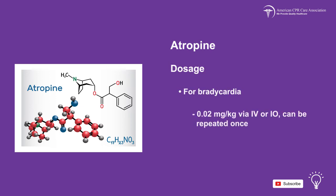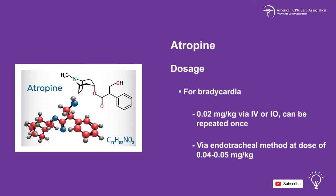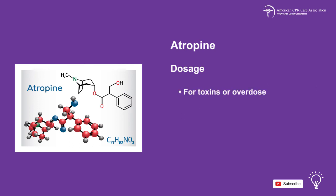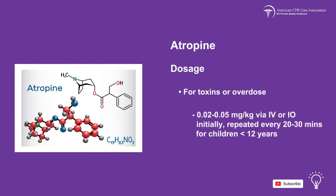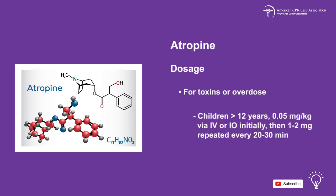The dosage for bradycardia is 0.02 mg per kg via IV or IO route, and this dose can be repeated once, or it may be administered via endotracheal method at a dose of 0.04 to 0.05 mg per kg. The dosage for toxins or overdose is 0.02 to 0.05 mg per kg via IV or IO route initially, to be repeated every 20 to 30 minutes for children under 12 years old. For children over 12 years old, administer 0.05 mg per kg via IV or IO route initially, and then 1 to 2 mg repeated every 20 to 30 minutes.